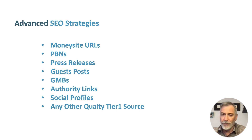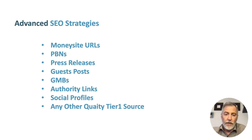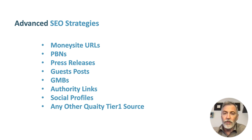You can apply the RD100 for your money site URLs, for your PBNs — remember the ratio of outbound links to inbound links — for your press releases, for your guest posts, your GMBs, authority links, social profiles, or any other quality tier one source. I'm also going to make at least three videos about applying these SEO strategies for GMB and local SEO.